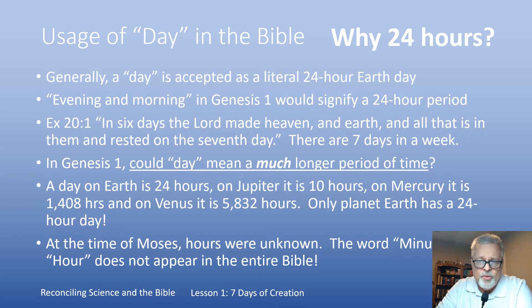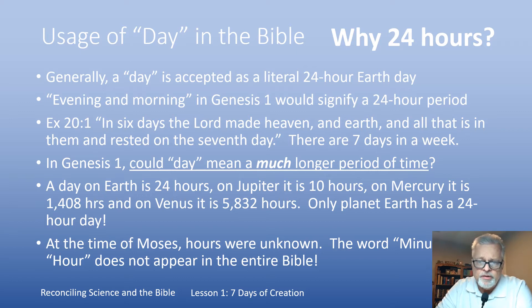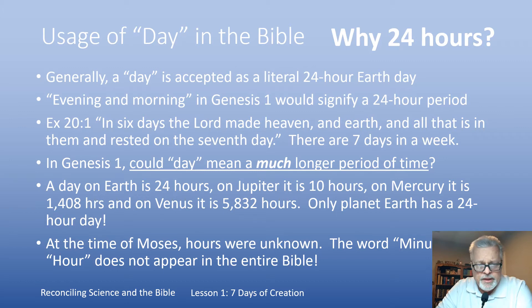In the Bible, why do we insist that in Genesis 1 a day represented 24 hours? Generally, a day is accepted as a 24-hour Earth day, and evening and morning in the language of Moses in Genesis 1 would also signify a 24-hour period. He said in six days the Lord made heaven and the earth and all that is in them, and then he rested on the seventh day. There are seven days in a week. But here's a question: in Genesis 1, could day mean a much longer period of time?